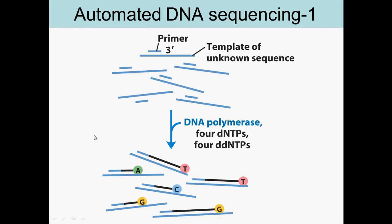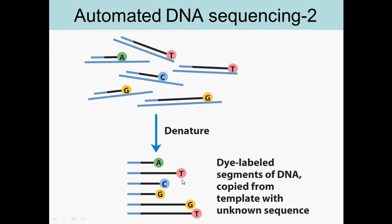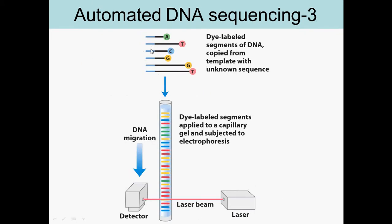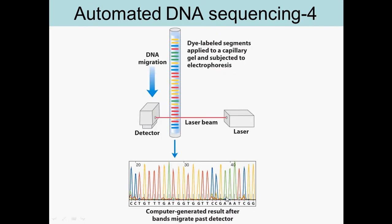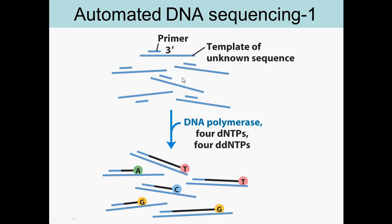In automated DNA sequencing, you start with an unknown sequence and a known primer sequence. After the primer, the sequence extends and you can determine what comes after the primer. You use the 4 dNTPs, but they are dual-labeled with fluorescence, and they stop at random lengths. You take that single test tube and run it through the gel. You don't have to worry about fragments running off the bottom because a laser beam keeps recording the color of each fragment as it passes, and the computer generates a graph and tells you the sequence of the unknown template.